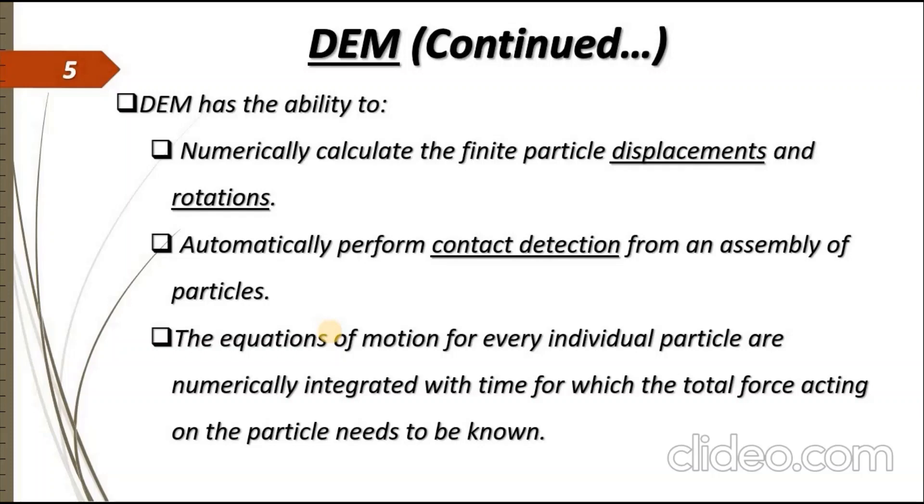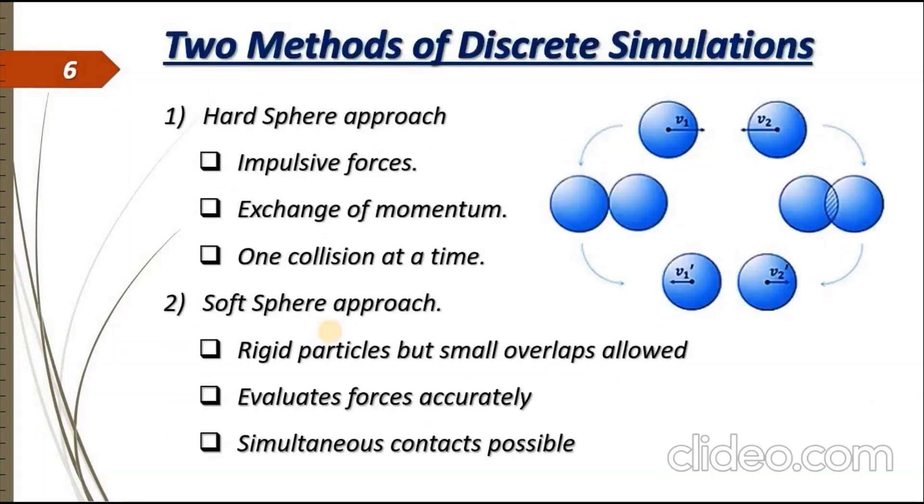Now there are two methods for discrete simulations. One is the hard sphere approach while the other one is the soft sphere approach. The left side of this figure is showing the hard sphere approach while the right side of the figure is showing the soft sphere approach. In the hard sphere approach, impulsive forces are allowed, exchange of momentum is possible, but only one collision of particle is possible at a time.